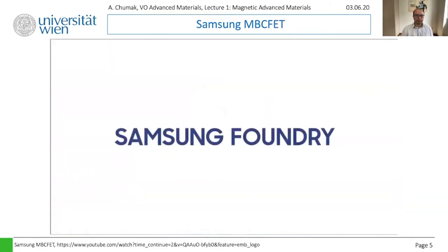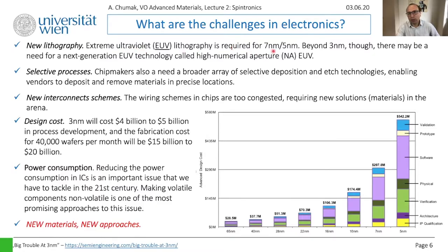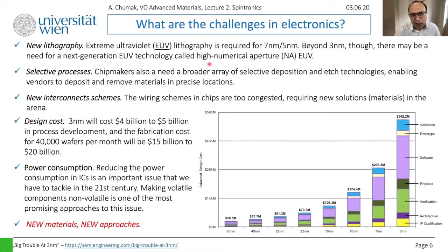That was a long story about how good electronics is, and it's good that we now understand what problems it has. To achieve seven or five nanometer nodes you need to go to extreme ultraviolet lithography, and beyond that, even a next generation called high numerical aperture extreme ultraviolet — yet another technological approach to solve the problem.